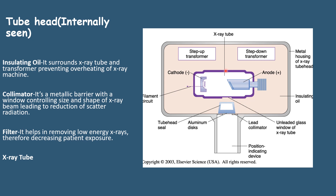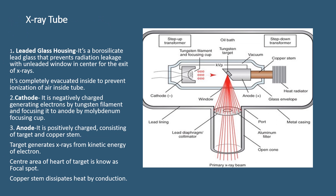This is the x-ray tube. The x-ray tube consists of a leaded glass housing, cathode, and anode. The leaded glass housing is made up of borosilicate lead glass. Its function is to prevent radiation leakage. It is completely evacuated inside to prevent ionization of air. This is the leaded glass which covers the entire x-ray tube. This leaded glass has a window — an opening from which the x-ray beams can pass through.